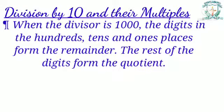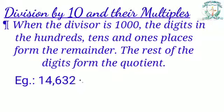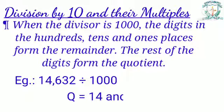When the divisor is 1000, the digits in the 100's, 10's, and 1's places form the remainder, and the rest of the digits form the quotient. For example, 14,632 divided by 1000: here 14 is the quotient and 632 is the remainder.